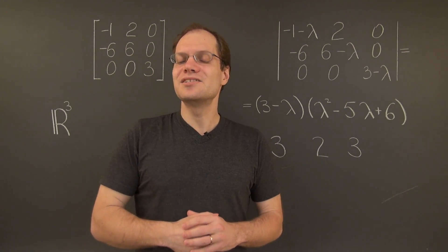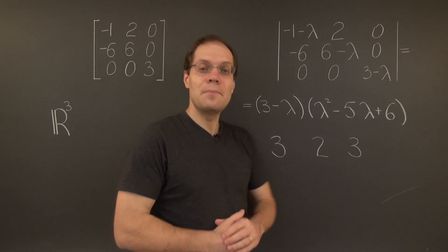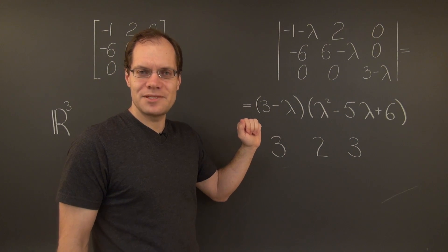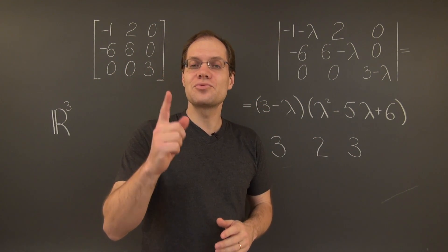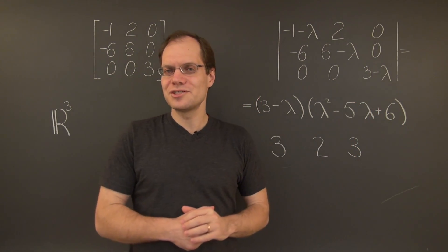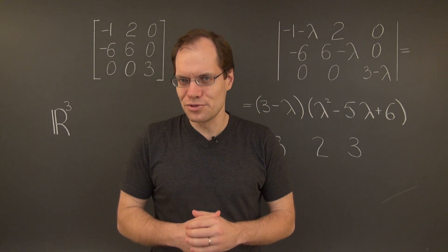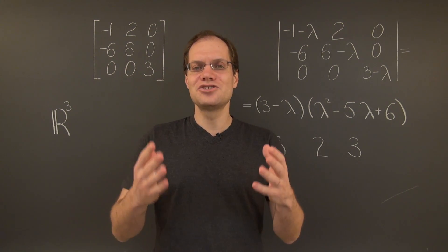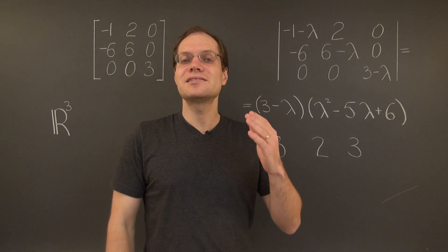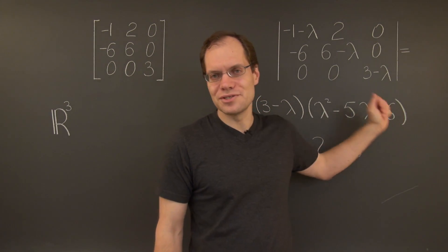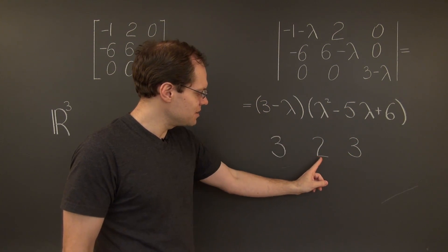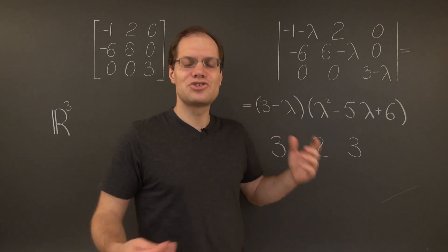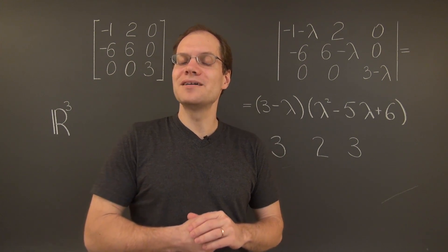And there, once again, is the rub. Because 3 appears as a root twice. If we were to factor this polynomial completely, we would have 2 minus lambda times 3 minus lambda squared. So 3 is a double root of this characteristic polynomial. It is also called the multiplicity of the root, and it is called the algebraic multiplicity of the eigenvalue. The algebraic multiplicity of the eigenvalue is how many times it appears as a root of the characteristic polynomial. So the algebraic multiplicity of eigenvalue 2 is 1, and the algebraic multiplicity of eigenvalue 3 is 2 — it is a repeated eigenvalue of algebraic multiplicity 2.